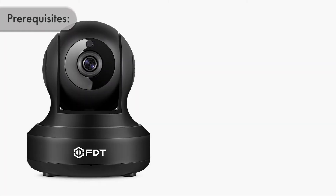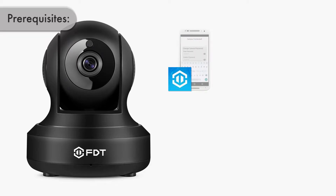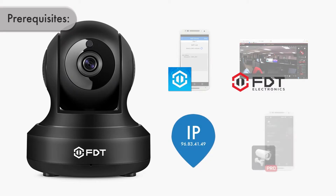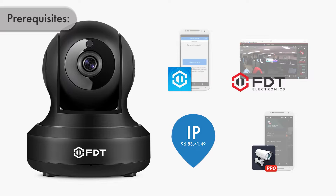Before we begin, please ensure you have completed the following items: set up your FDT camera on your local network using the FDT View app, set up desktop access, note down the external IP address of your network, and have installed the TinyCam Monitor app to your Android smartphone device. A link to the FDT Wi-Fi setup video and FDT desktop access setup video is available in the video description.